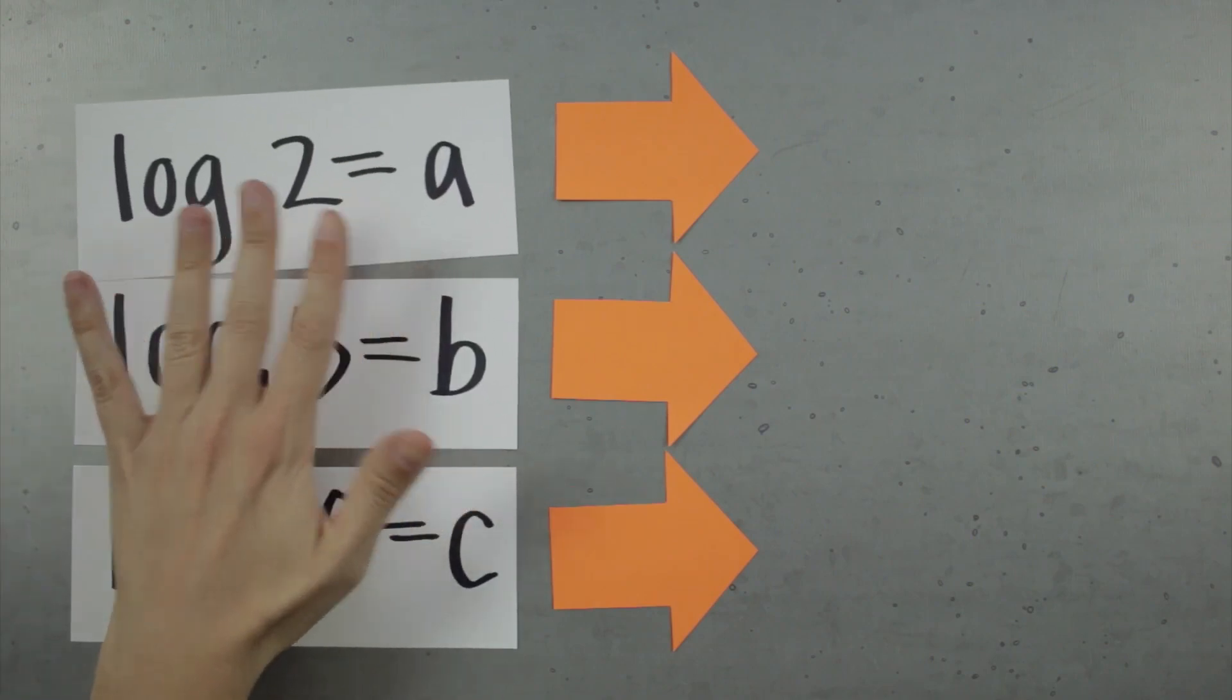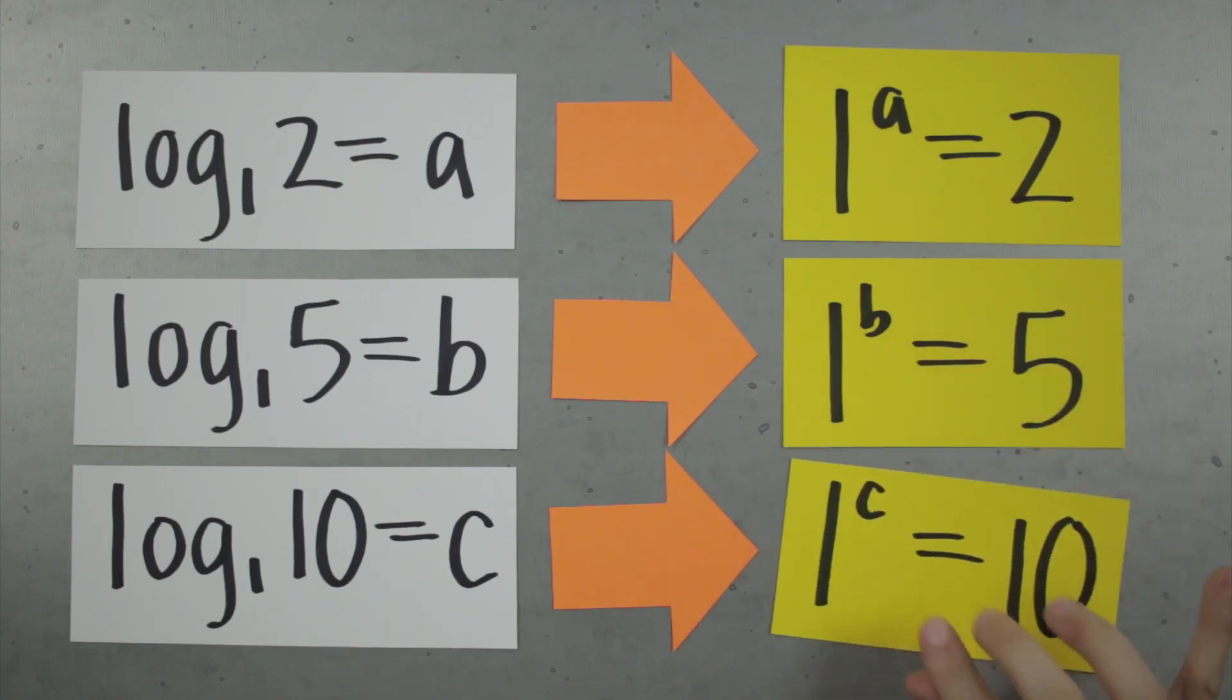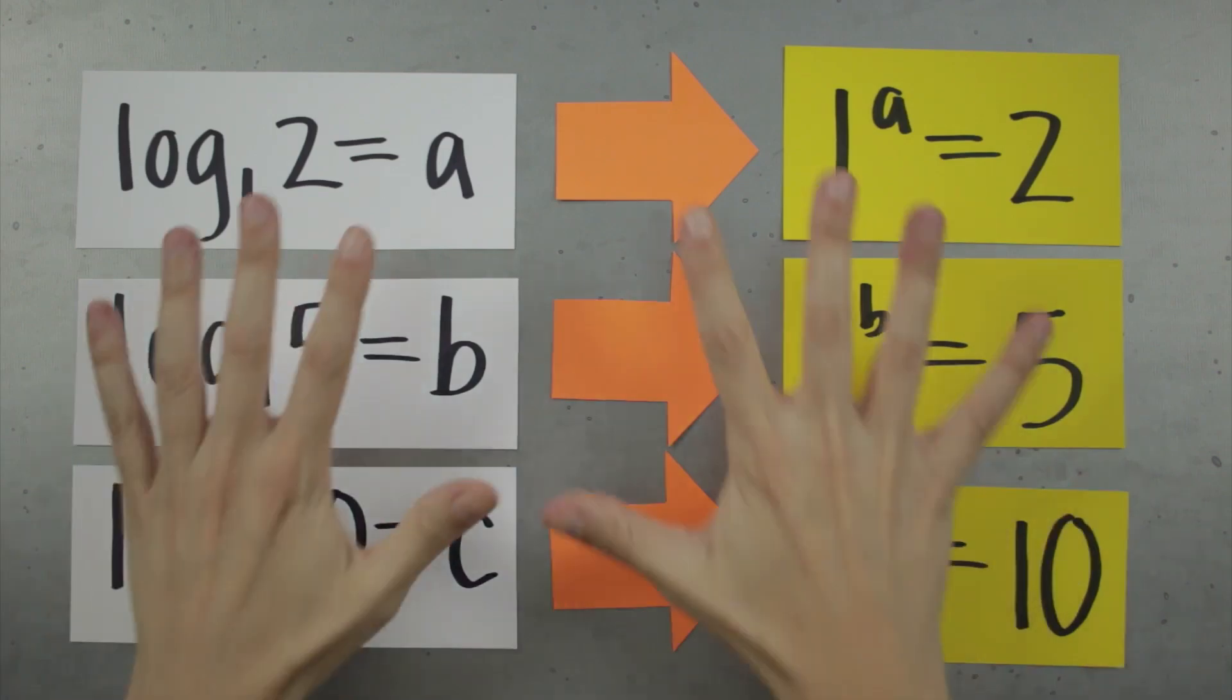In the same way, if b is 1, we end up with these equations. And again, we can't solve for a or b or c. 1 raised to anything is still 1. There's no way we can get to 2 or 5 or 10. So we can't allow logs to have a base 1 either.